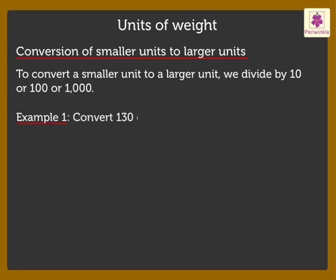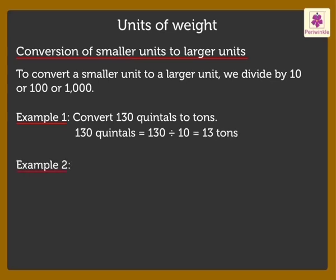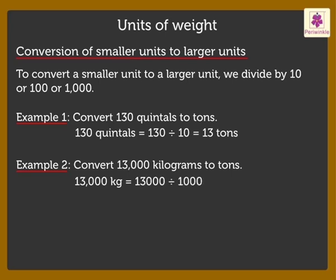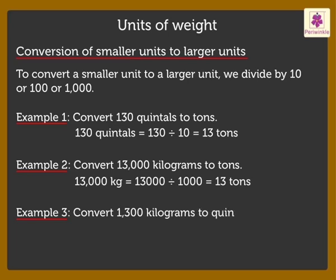Convert 130 quintals to tons. So, 130 quintals is equal to 130 divided by 10 is equal to 13 tons. Similarly, we can convert kilogram to ton by dividing the number with 1000 and kilogram to quintal by dividing the number with 100.